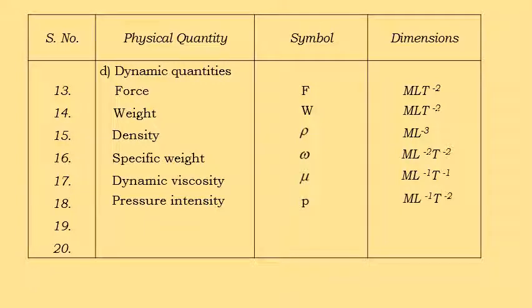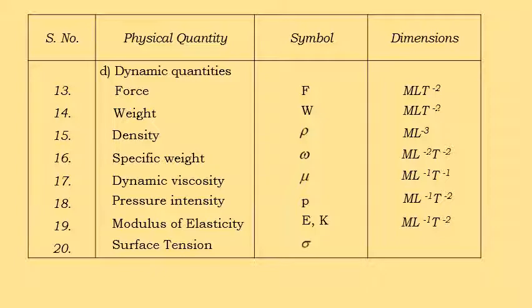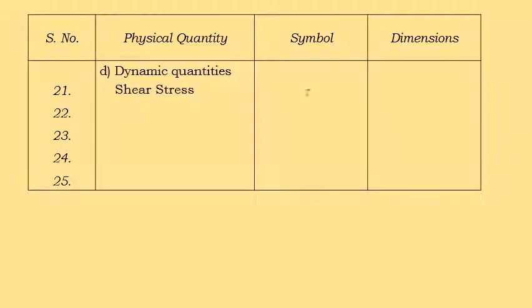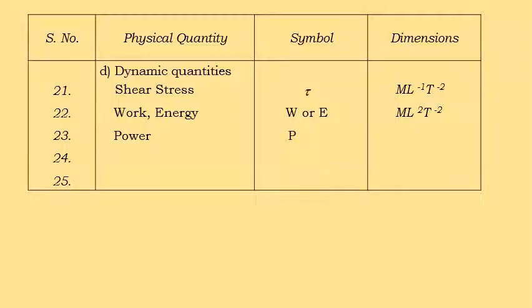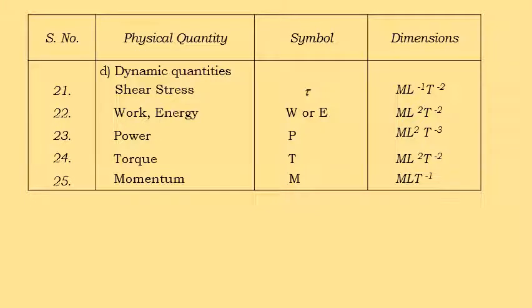Pressure intensity, P, has dimensions M L⁻¹ T⁻². Modulus of elasticity, E or K, has dimensions M L⁻¹ T⁻². Surface tension, sigma, has dimensions M T⁻². Shear stress, tau, has similar dimensions. Work and energy, denoted W or E, and Power, P, follow accordingly. Torque, T, has dimensions M L² T⁻². Momentum, M, has dimensions M L T⁻¹. These are all the dimensions for physical quantities.